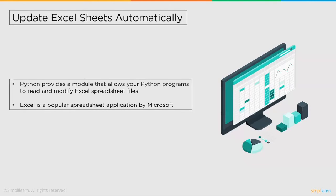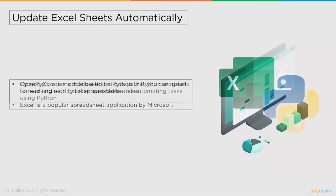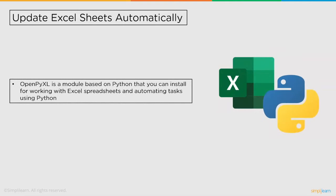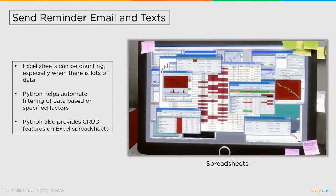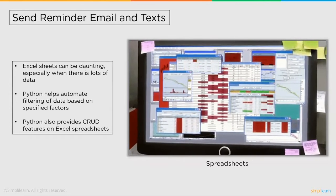Followed by sending automated emails and text messages, we advance into updating Excel sheets automatically. Python provides a module that allows your Python programs to read and modify Excel sheets — not just Excel sheets, but other formats like OpenOffice or LibreOffice sheets or basically any spreadsheet. Excel is a popular spreadsheet application by Microsoft, but there are a lot of alternatives. OpenPyExcel is a Python module you can install for working with Excel spreadsheets and automating tasks. Excel sheets can be daunting especially when there is a lot of data. Python helps automate filtering of data based on specified factors depending on the data type. Python provides CRUD — create, update, and delete — along with other features on Excel spreadsheets.